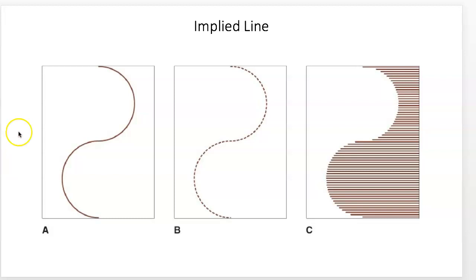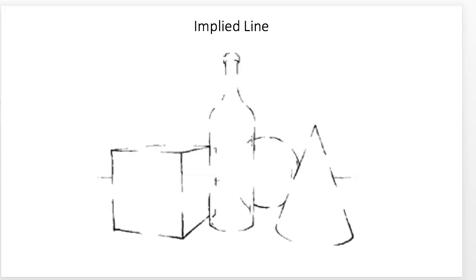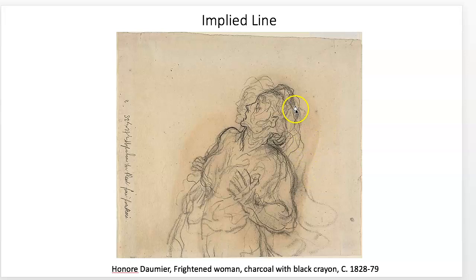Implied line is created by positioning a series of points so that the eye tends to automatically connect them. It can be like a dashed line, but also other ways — your eye is connecting spaces as if a line were there, but it's not an actual line. This can be seen in a still life where the form is being defined by an implied line, or possibly something closer to a gesture line going across the form to define it.